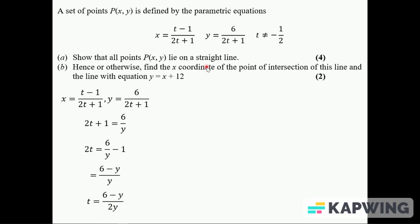So make this one fraction, divide by 2, then I need to sub this into the x parametric equation. So I'll have 6 minus y over 2y minus 1, then 2 lots of it plus 1 on the bottom. Need to simplify this. I can multiply the top and bottom by 2y, so this term is gonna be 6 minus y and this is gonna be minus 2y. This will be 2 lots of 6 minus y and then another 2y there. I'll simplify it. That's 6 minus 3y on the top, but the bottom line just becomes 12. These two minus 2y and 2y cancel each other out.